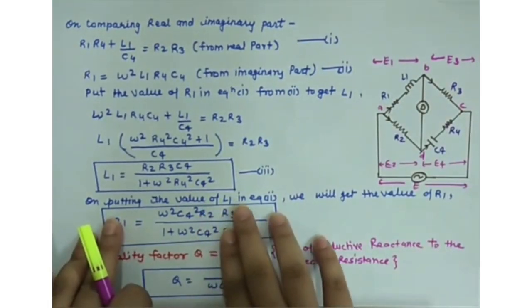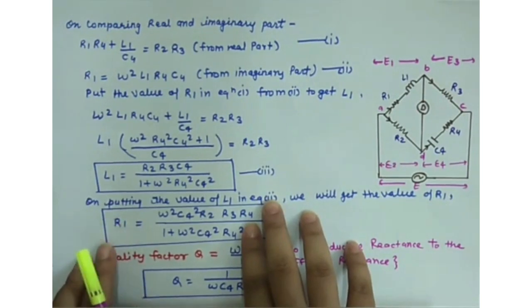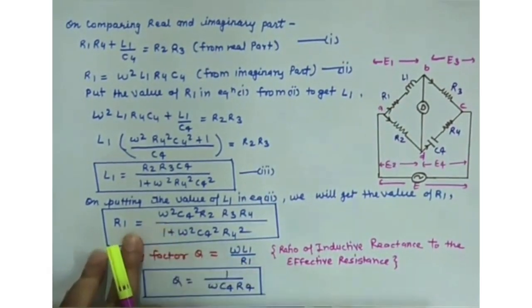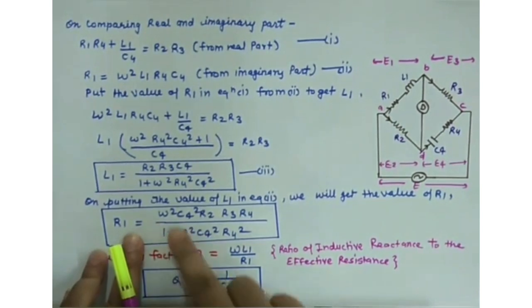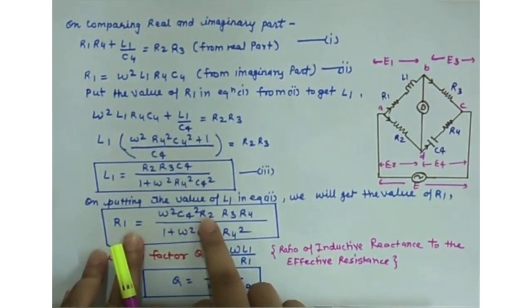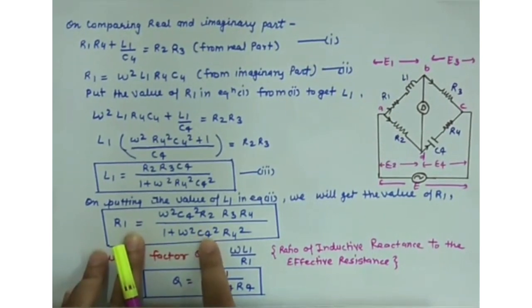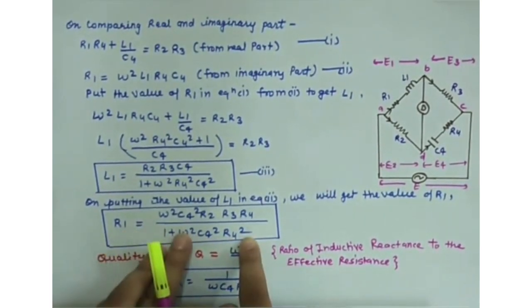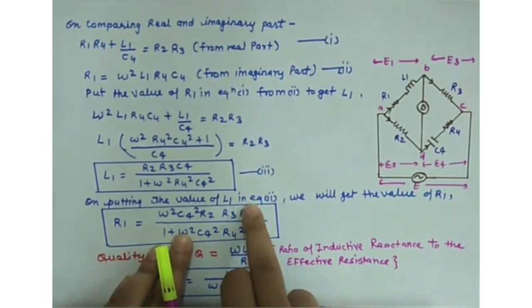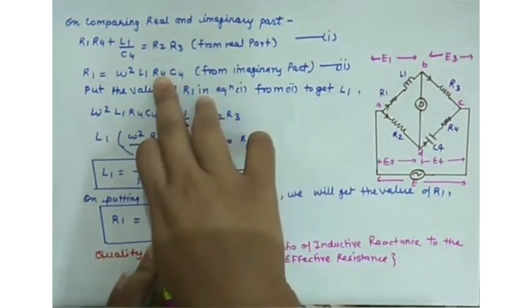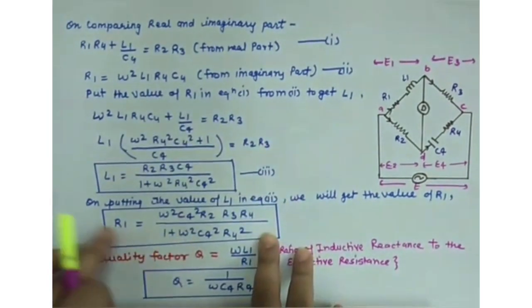Substituting the value of L1 from equation 3 back into equation 2, we get the value of R1: R1 = ω²C4²·R2·R3·R4 / (1 + ω²C4²·R4²).